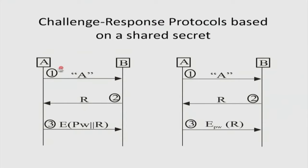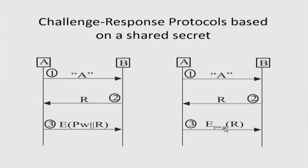This is one-way authentication — A is trying to prove to B that she is indeed A. She says 'I am A', B says 'if you really are A, take this as my challenge and perform the following operation: compute the hash of your password concatenated with my fresh challenge and send it across.' Alternatively, using encryption: take this challenge R and encrypt it with a predetermined function of your password as the key, and send that across.